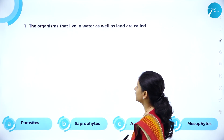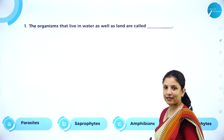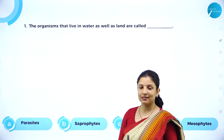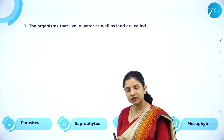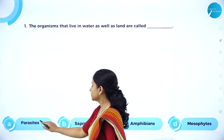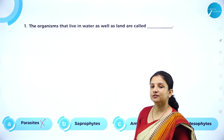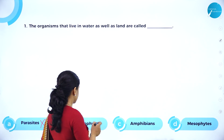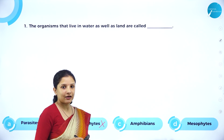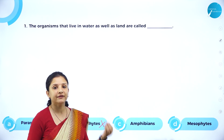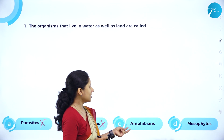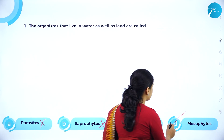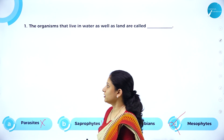MCQ: The organisms that live in water as well as land are called — parasites? No, parasites are those organisms which live on other living hosts and derive nutrition from those hosts. Saprophytes? No, saprophytes depend on dead and decaying organic matter. Amphibians? Yes — amphibians are those organisms capable of living on land as well as water, therefore they have a dual life. Amphibians is the right answer. Mesophytes is wrong.